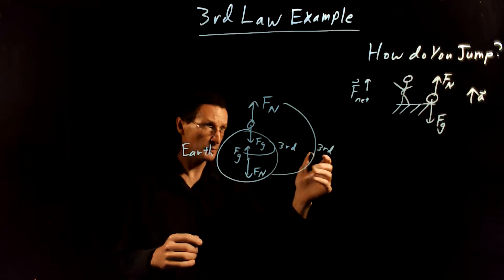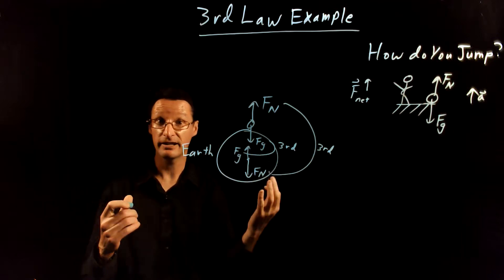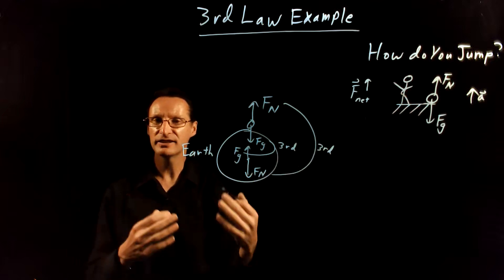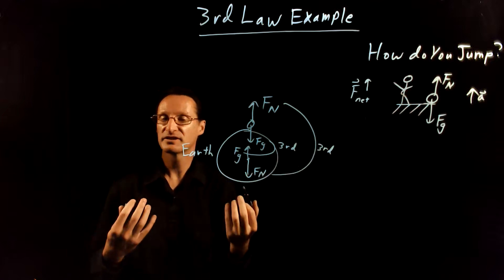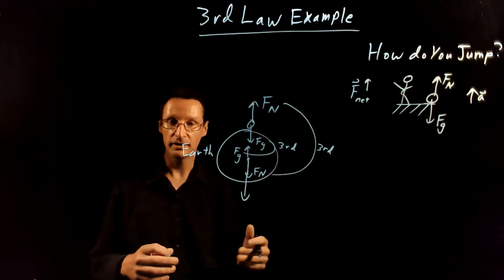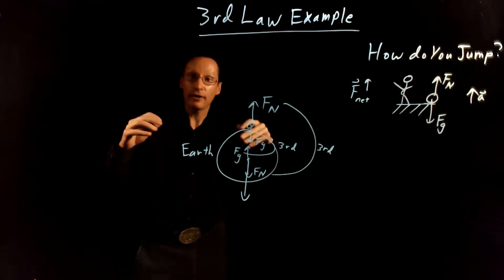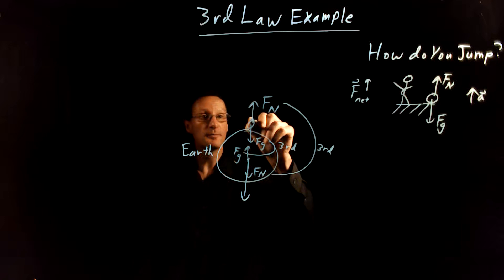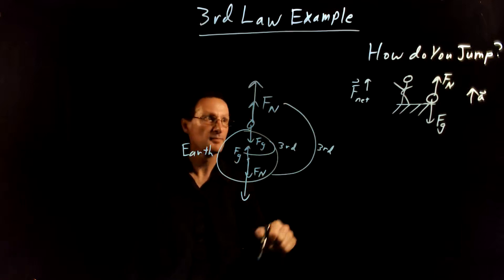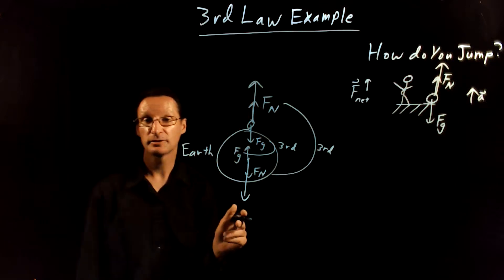So then how do we jump? Well, we need a net force up. That means we need our normal force to be bigger than our gravitational force. But that normal force is exerted by the earth. So how do you convince the earth to put more force on you? Well, you just make the force that you put on the earth bigger. That means you push down on the earth hard and the earth pushes up on you hard with the same hardness that you push on the earth. And so that gives you a net force that's up and gives you an acceleration that is up.